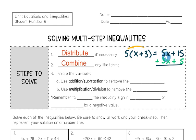So 5x plus 3x we can go ahead and combine — that would make 8x. If you solve 15 plus 5, that makes 20. But you cannot put 8x and 20 together any further because they are not like terms.